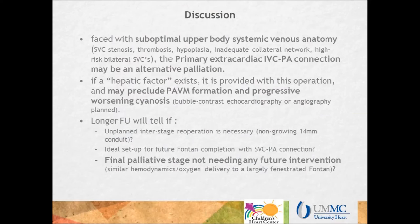In conclusion, faced with suboptimal upper body systemic venous anatomy such as SVC stenosis, thrombosis, hypoplasia, or with high-risk bilateral SVCs, the primary extracardiac IVC to PA connection is an alternative palliation. If a hepatic factor exists, it is provided with this operation and may preclude pulmonary arteriovenous malformations and progressive worsening cyanosis. Bubble contrast echocardiography or angiography will be planned for our patient. Longer follow-up will tell if an unplanned interstage re-operation is necessary given a non-growing 14-millimeter conduit, if this is an ideal setup for future Fontan completion with an SVC to PA connection, or if this represents a final palliative stage not needing further intervention, since this situation is similar with regards to hemodynamics and oxygen delivery to a largely fenestrated Fontan.